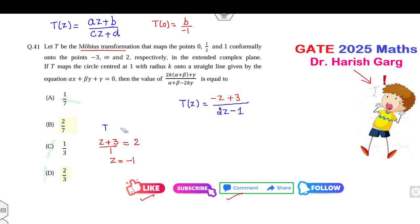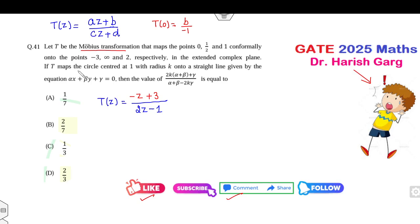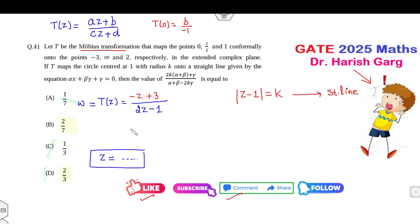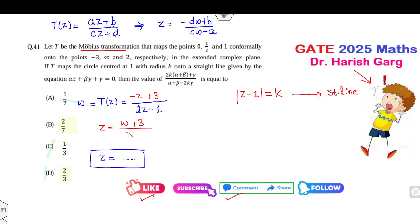Once you know the Möbius transformation, read the next part of the statement. It is given that T maps a circle with center and radius k to a straight line. To find z from ω, you can cross-multiply and solve, or directly use the inverse: z = (−dw + b)/(cw − a). Comparing a = −1, b = 3, c = 2, d = −1, the inverse gives z = (w + 3)/(2w + 1).